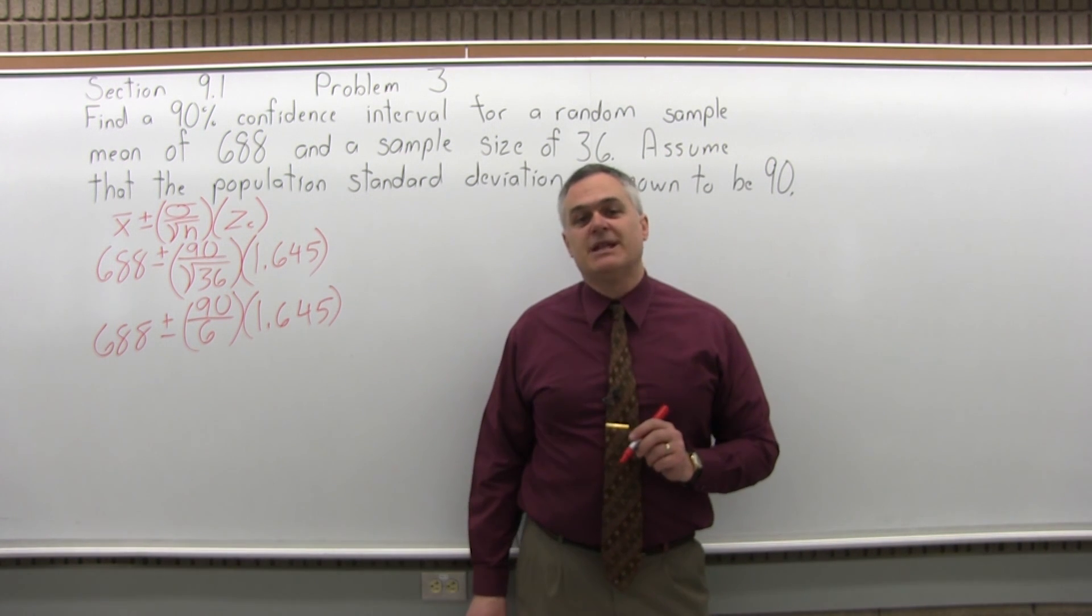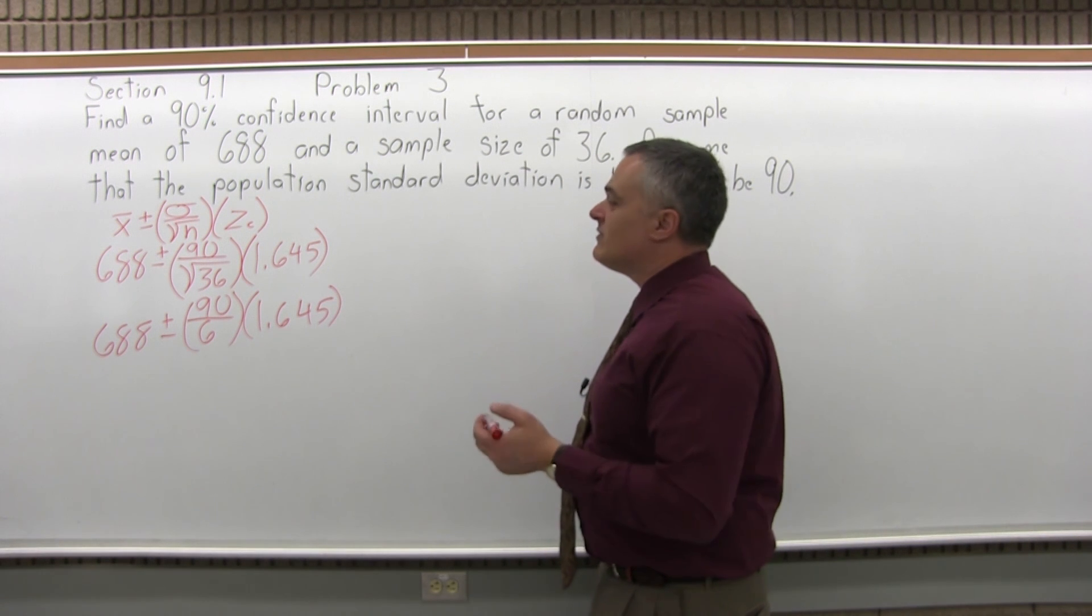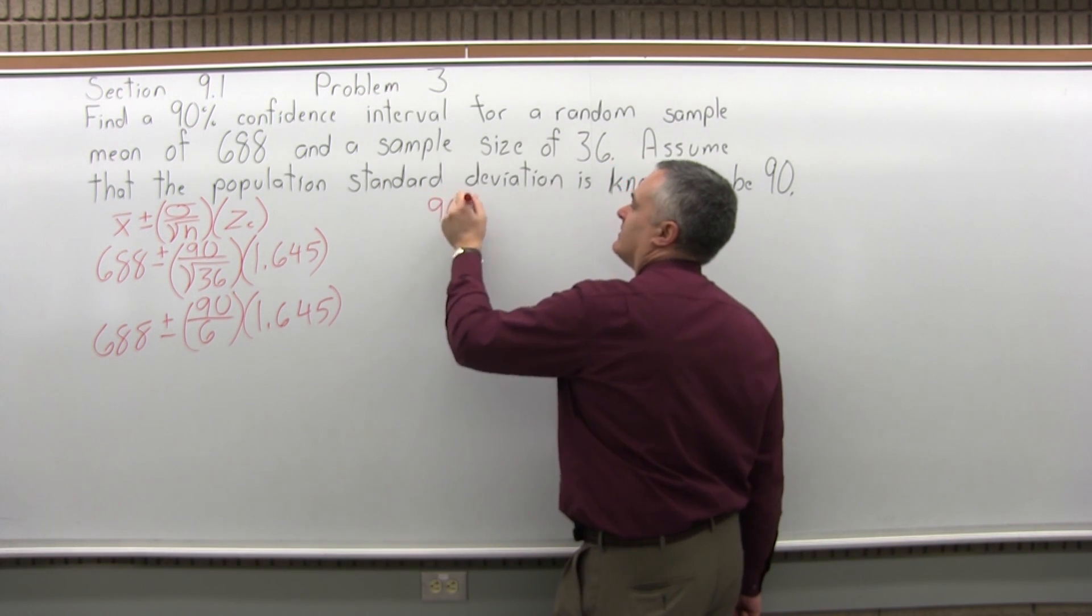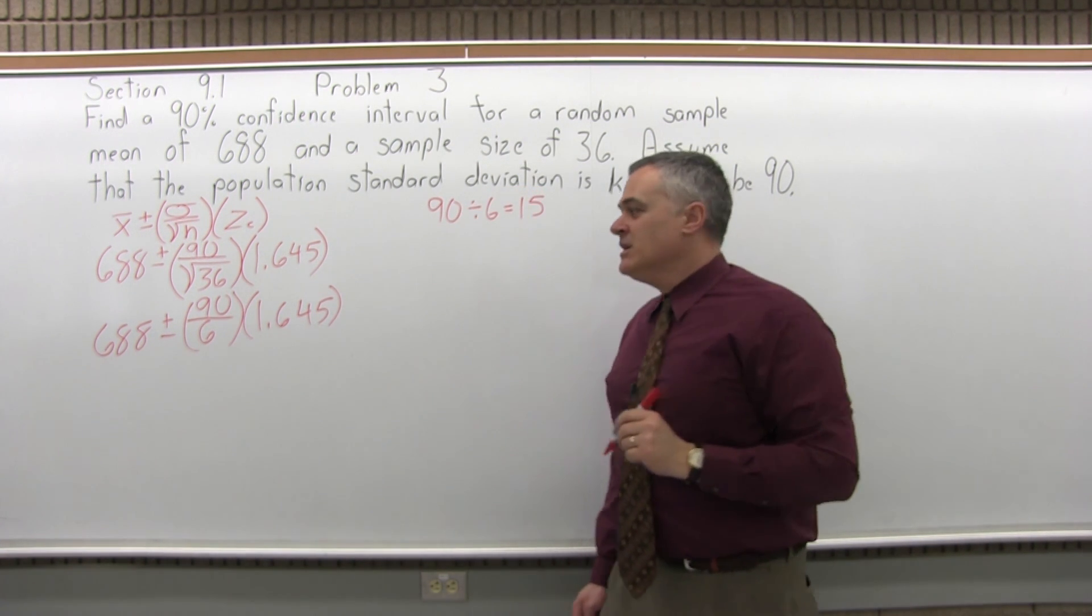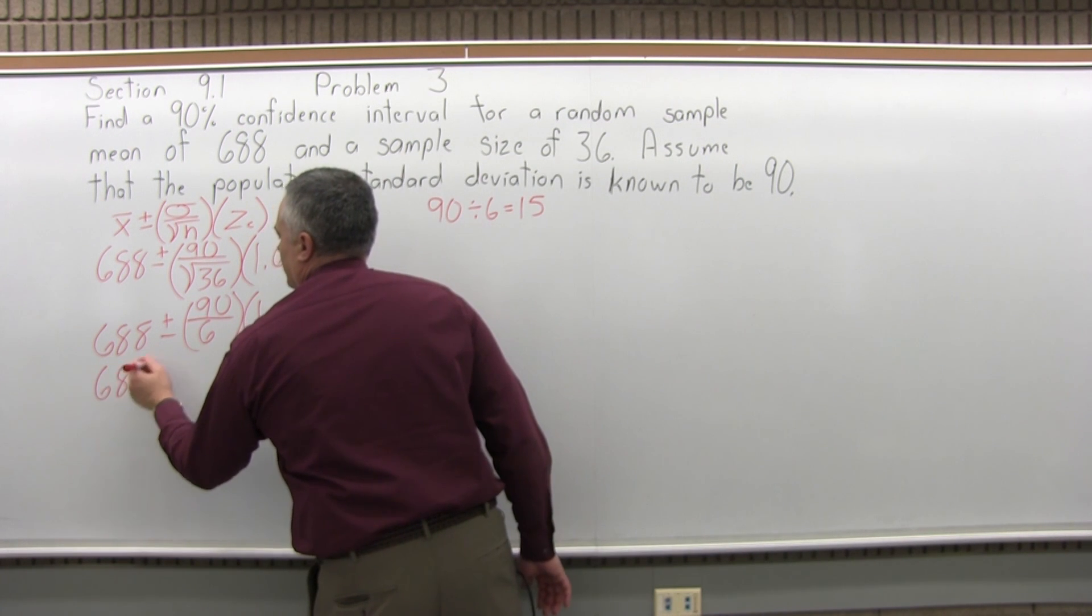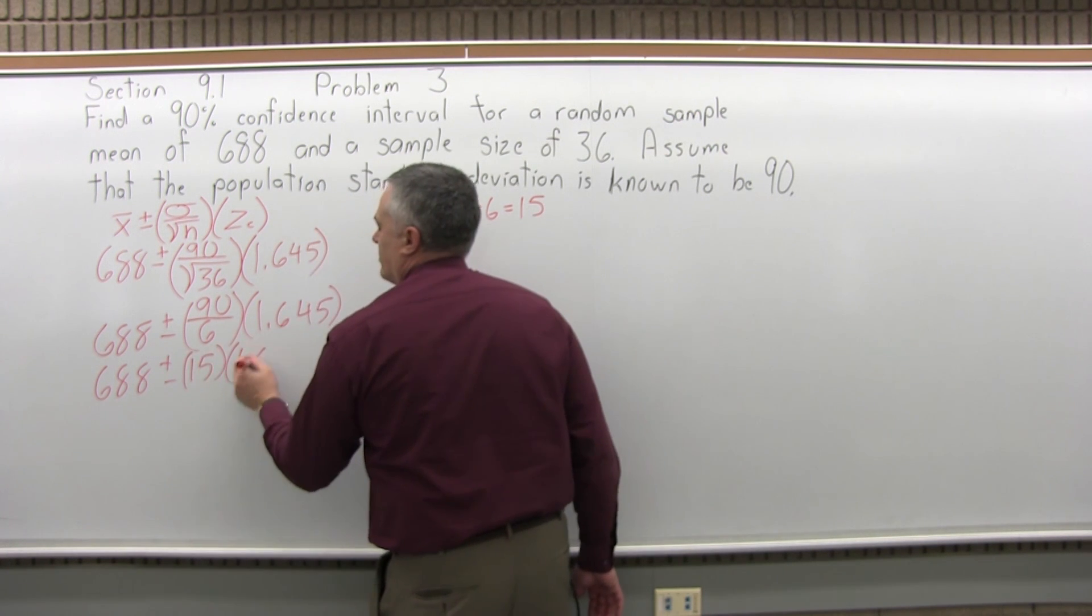Now the next thing we can do is reduce the 90 divided by 6. It does happen to go in evenly. If you don't see what it is, off to the side somewhere you can use your calculator. 90 divided by 6 equals. And the calculator will tell you pretty quickly that it's 15.